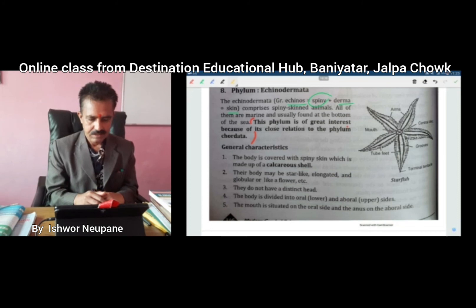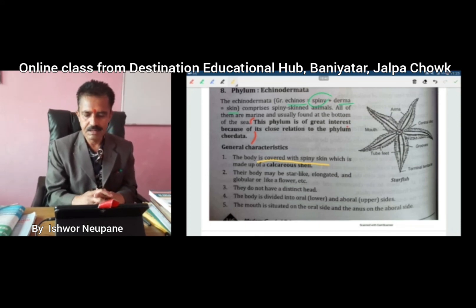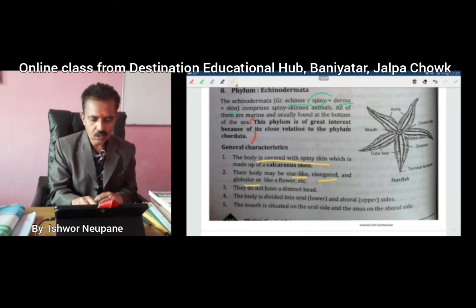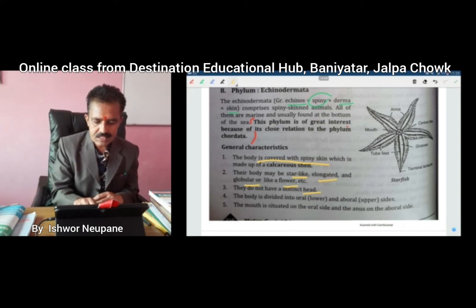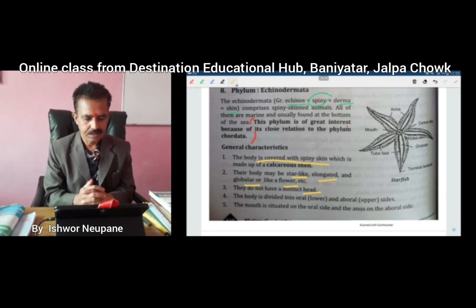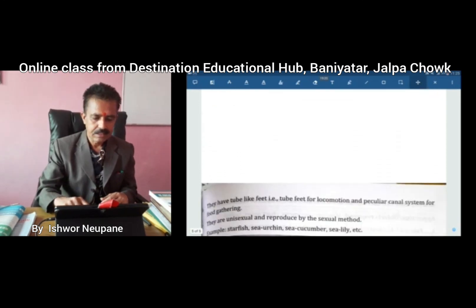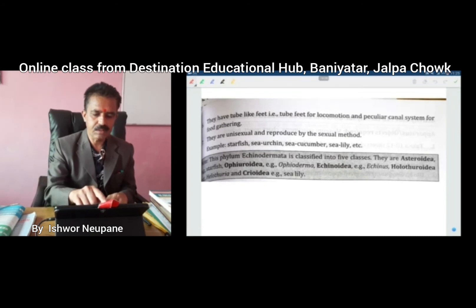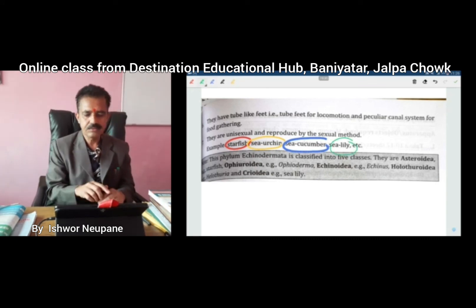Characteristics of Echinodermata: their body is covered with spiny skin made up of calcium carbonate. Their body may be star-shaped, long, globular, or flower-shaped. They do not have distinct head. Examples of animals belonging to phylum Echinodermata: starfish, sea urchin, sea cucumber, sea lily.